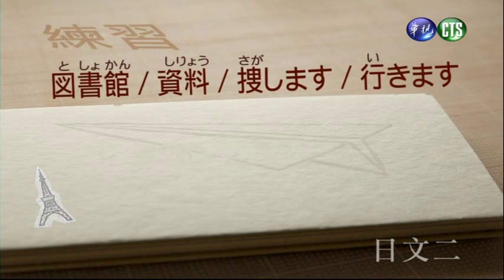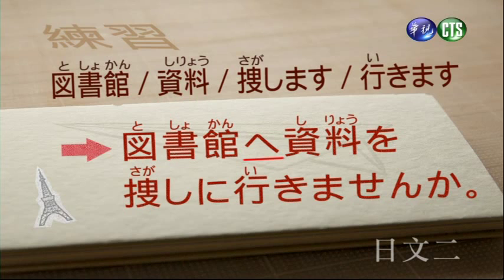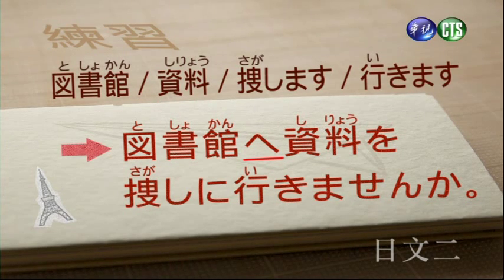図書館、資料、探します、行きます，句型會變成：図書館へ資料を探しに行きませんか（要不要去圖書館找資料）。資料を探しますは找資料的意思。那麼這個地方我們休息一下，待會再來做綜合練習。